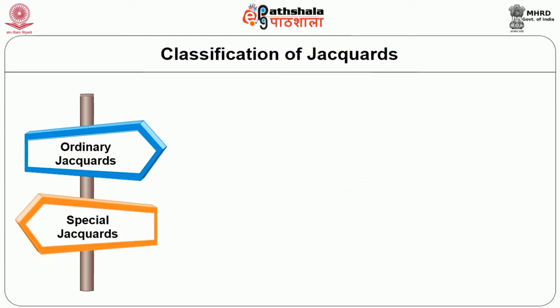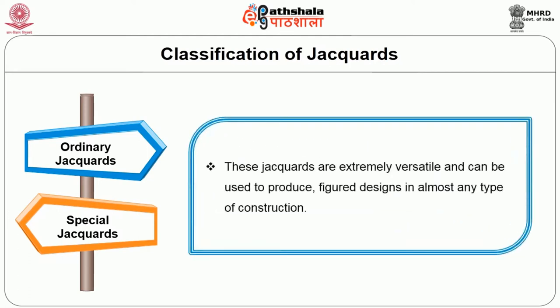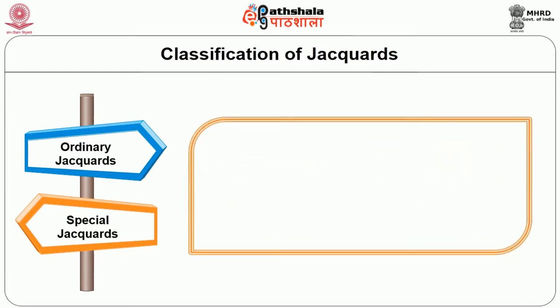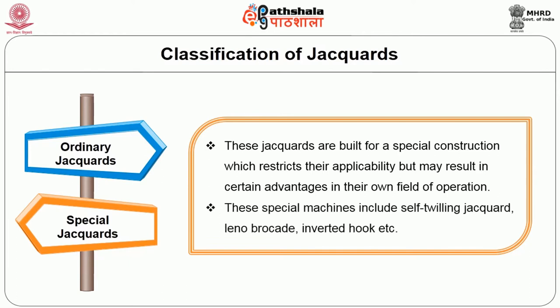The ordinary jacquard machines are extremely versatile and can be used to produce figure designs in almost any type of construction. The special jacquard machines are built for special construction which restricts their application but may result in certain advantages in their own field of operation. These special machines include, for example, the self-tooling jacquard, the Leno Brocade jacquards, and the inverted hook jacquards, which are all special purpose jacquards.